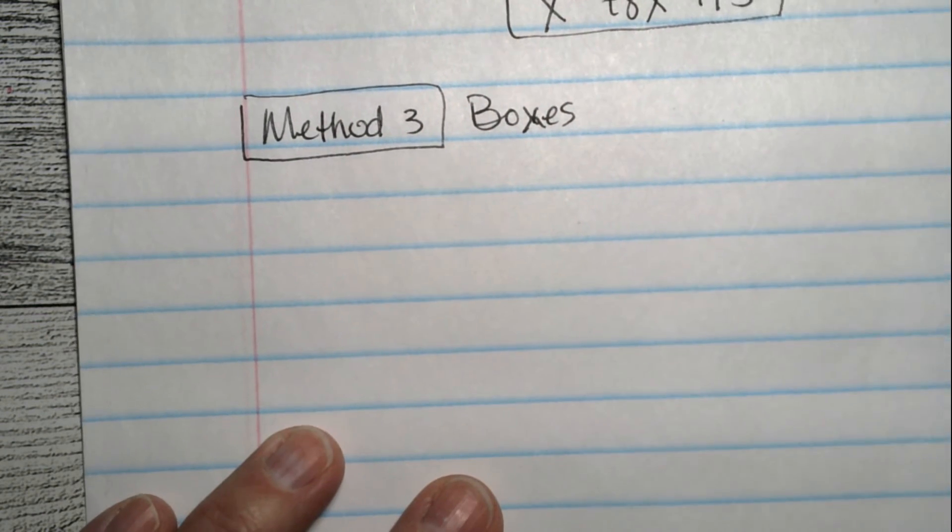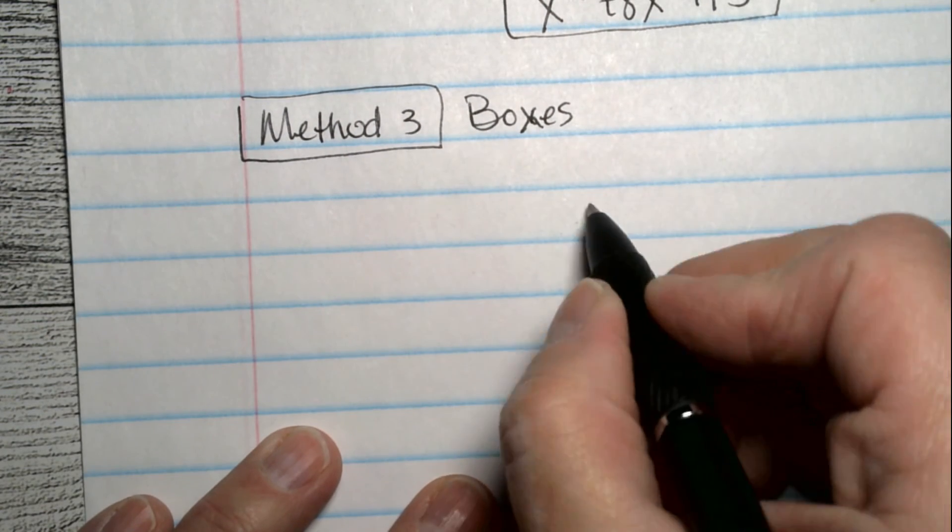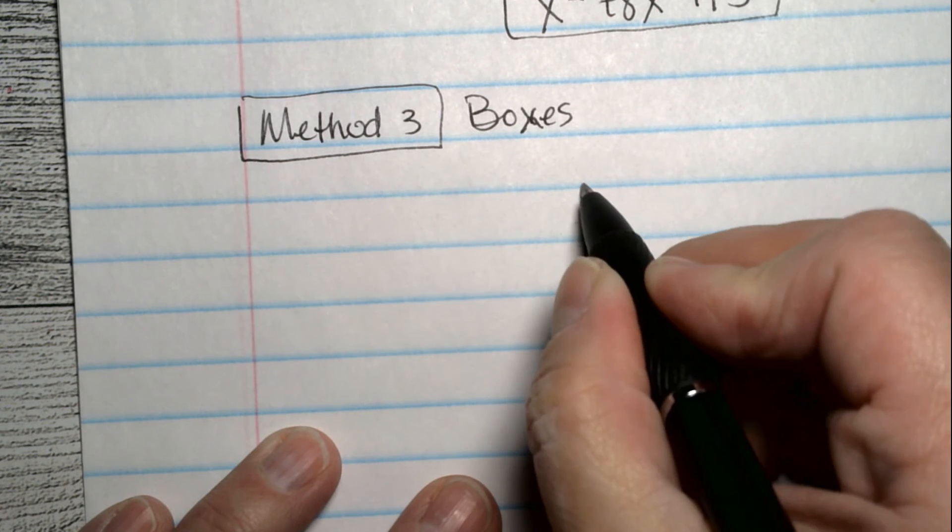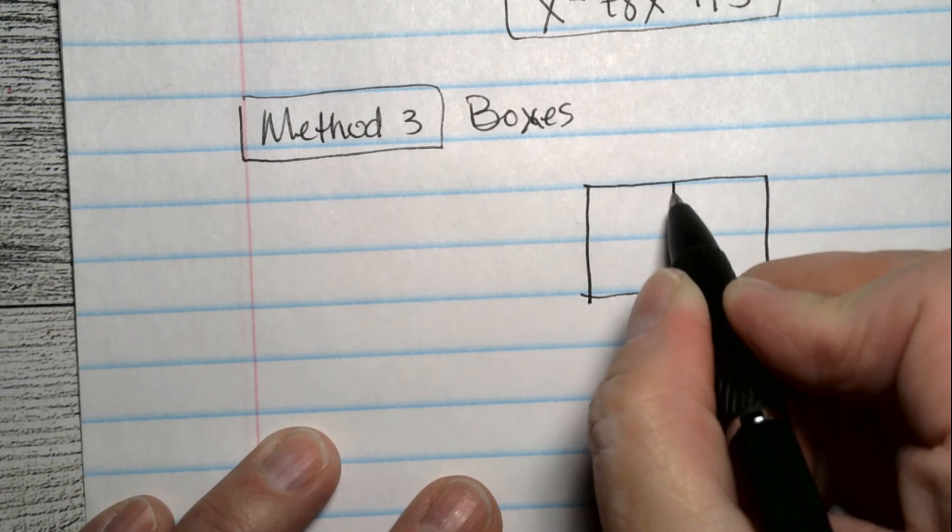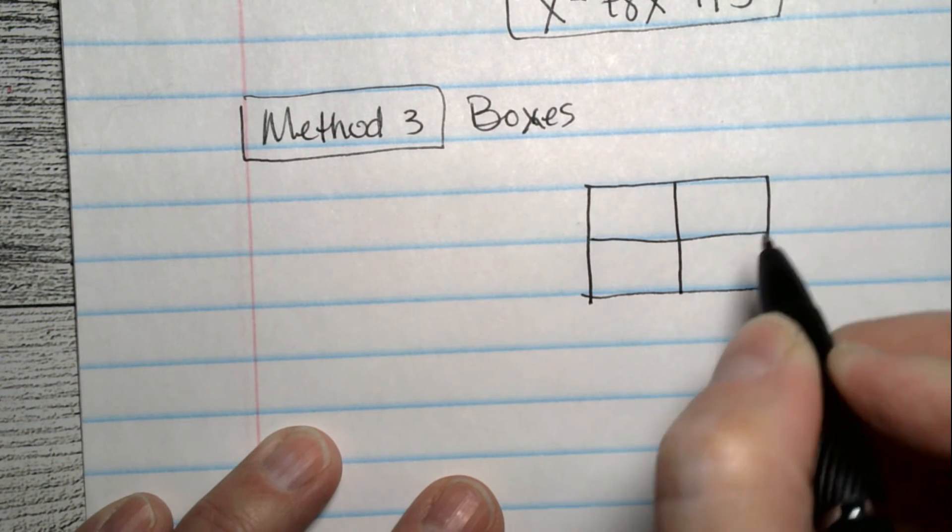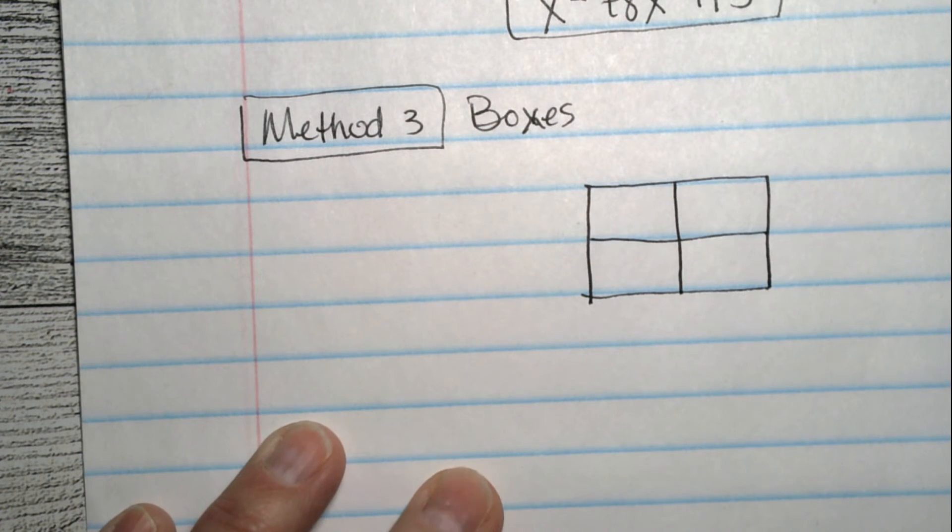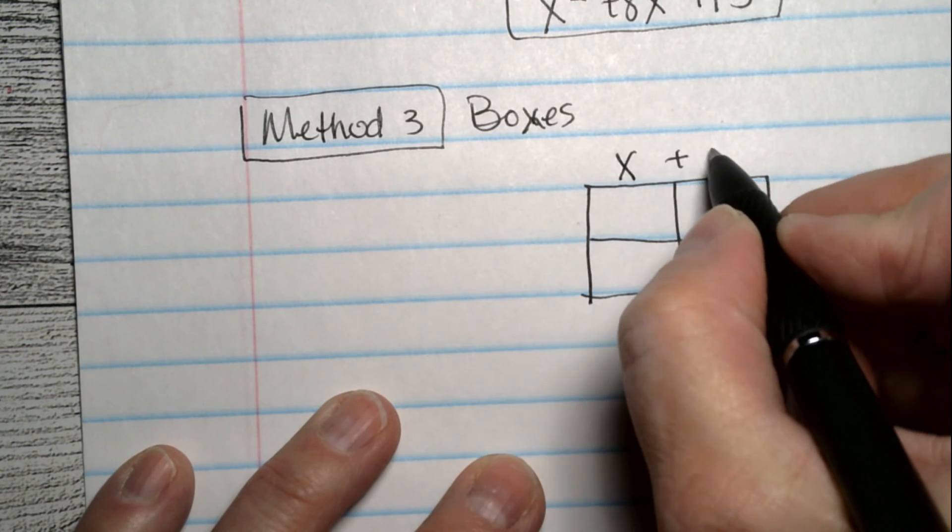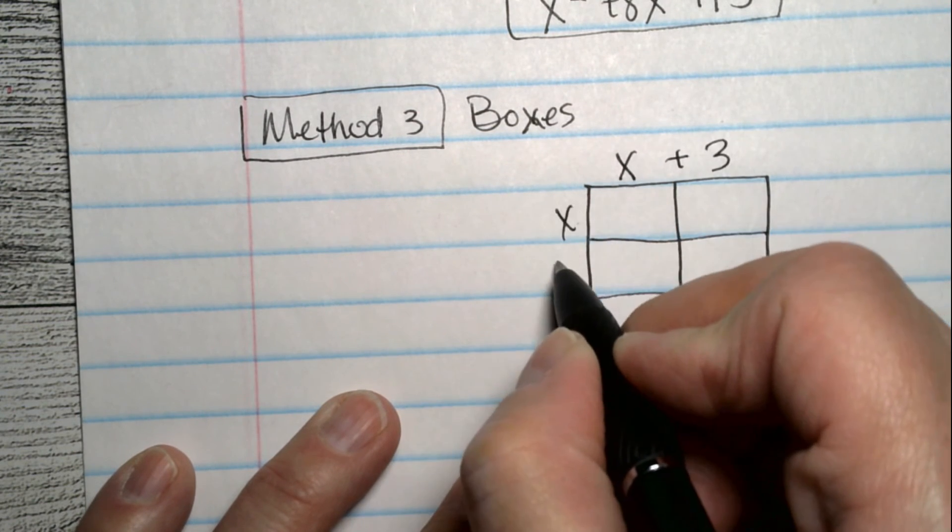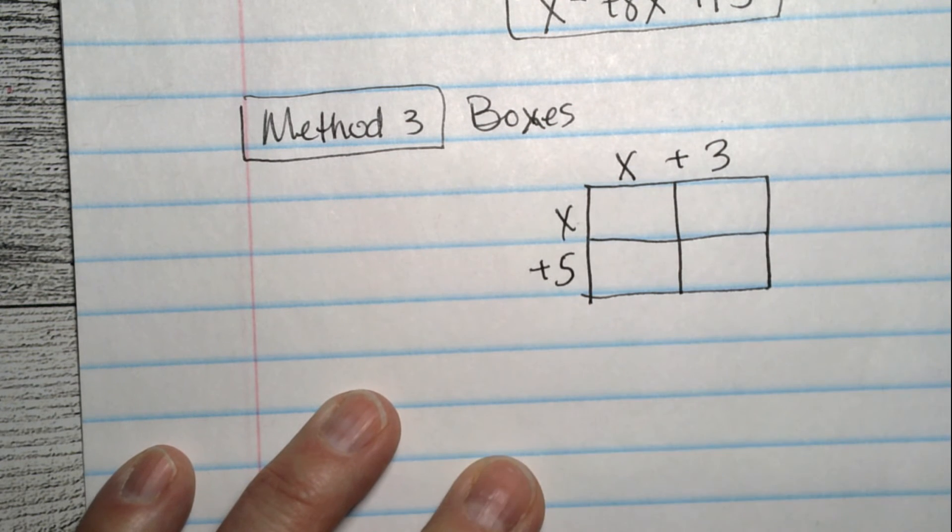So it's the same problem. But the way we do this one is we draw ourselves up a little box. That has four pieces to it like this. And we put the x plus 3 on the top. And the x plus 5 along the side.